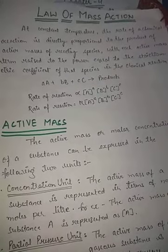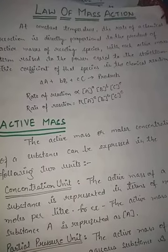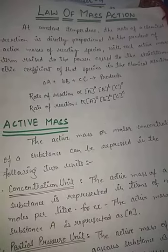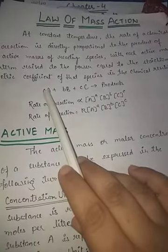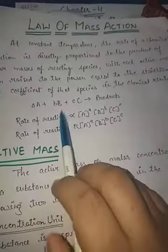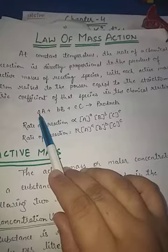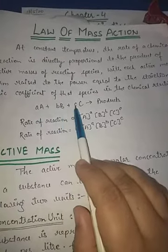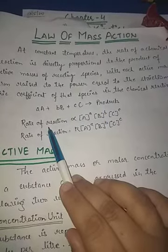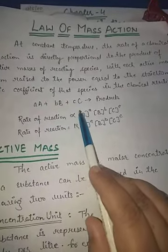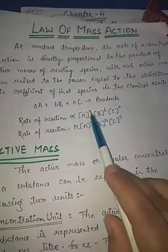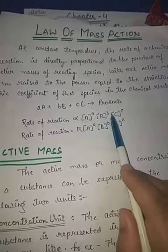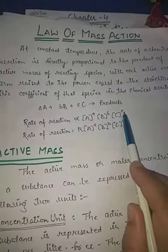Today we will start with the Law of Mass Action. At constant temperature, the rate of a chemical reaction is directly proportional to the product of the concentrations raised to the power of their stoichiometric coefficients. Suppose a of A, b of B, and c of C are reacting together to form products. Then the rate of the reaction is proportional to [A]^a × [B]^b × [C]^c.